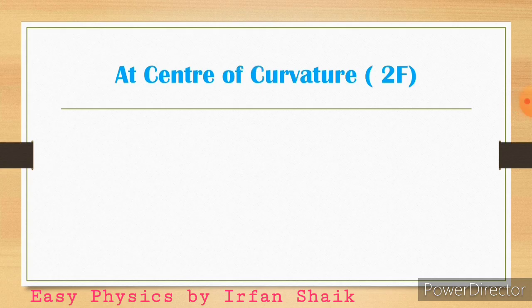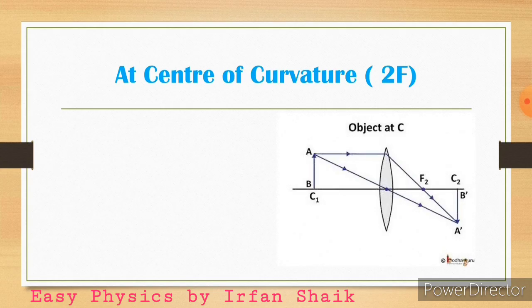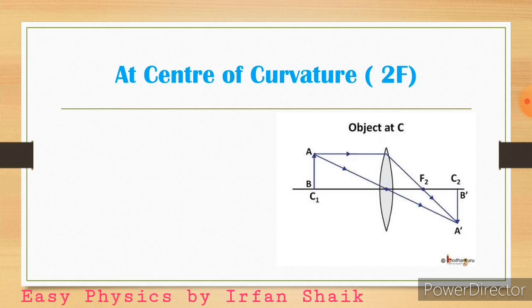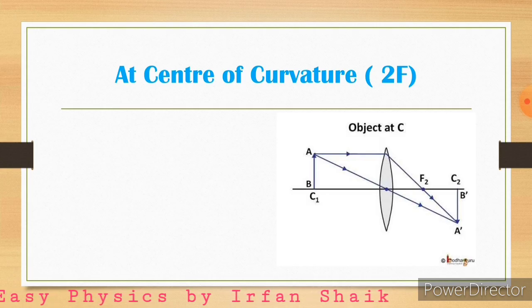Third case: when object is placed at the center of curvature. Here AB indicates the object and A'B' indicates the image. By this ray diagram, you can easily find out that the object is at the center of curvature and the image is also formed at the center of curvature — on the other side of the lens.